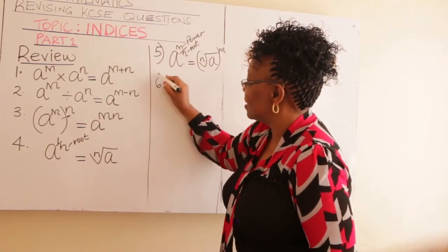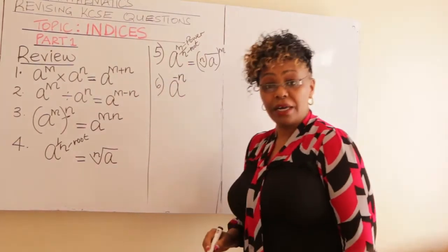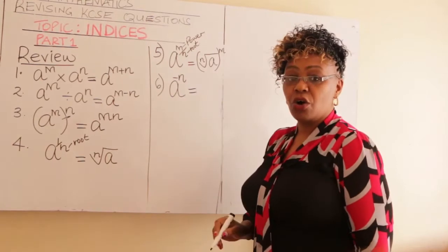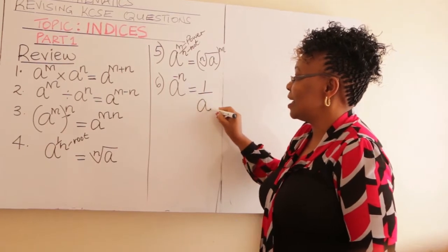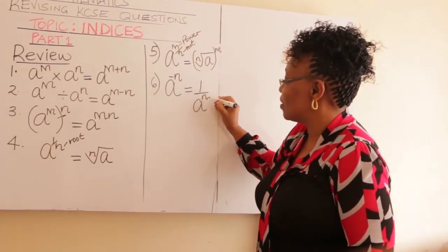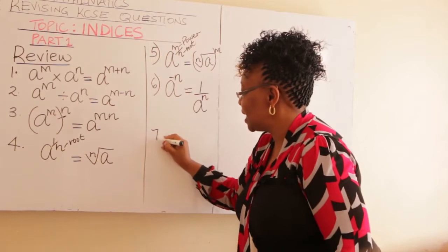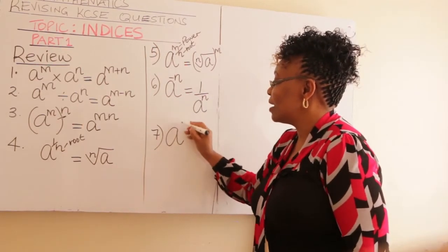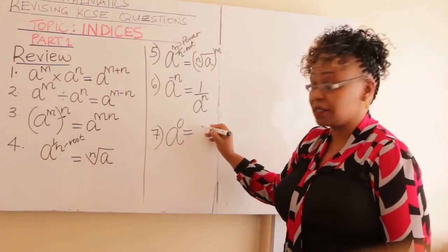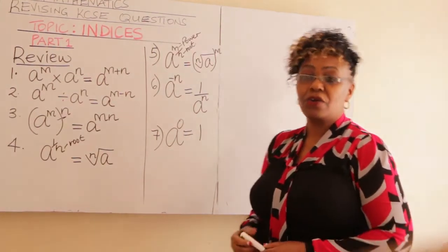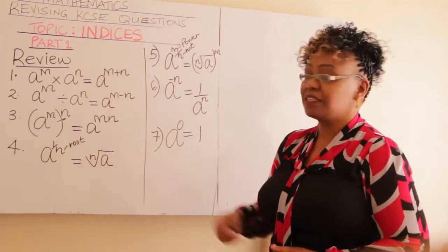Number six: if you have A raised to a negative power, it is the same as the fraction one over A raised to the positive power. And finally, number seven: any number raised to zero is one. Learn all of that. Let us go to KCSE problems and work them out.